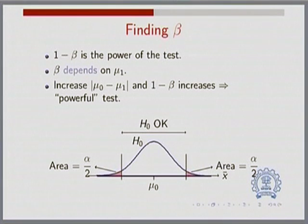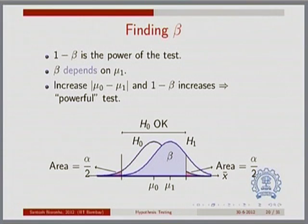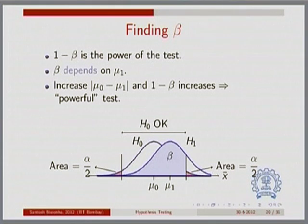If I sketch H0 and here is a depiction of beta, you can quickly see that if I move my curve for H1 to the right, the overlap between the two curves will decrease — the overlap within my goalposts will start decreasing. So as I move the H1 curve to the right, the overlap decreases, beta decreases, and if beta is decreasing, 1 minus beta is increasing, and so I have a more and more powerful test.